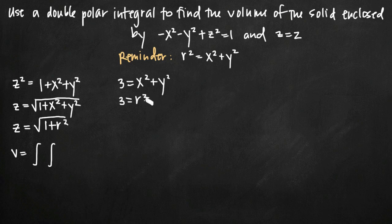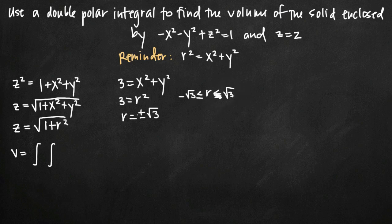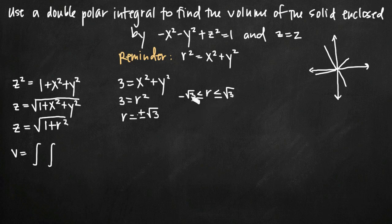Taking the square root of both sides gives r equals positive or negative square root of 3. However, in a polar coordinate plane, r is always a positive value — it represents the distance out from the origin, which is always positive. So the negative value doesn't apply here, and the lowest value r can attain is 0. Therefore our limits of integration for r are 0 and square root of 3.